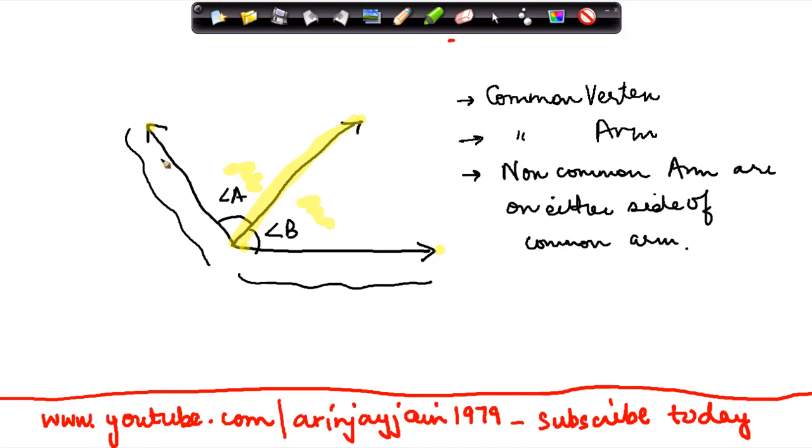This is the common arm. On either side of it, you have non-common arms. So in such a case, these two angles, angle A and angle B, are called adjacent angles. Adjacent itself means side by side.